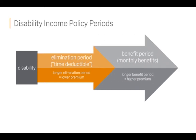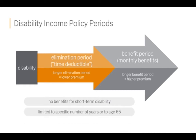The other period is called the benefit period. Once you've gotten through the elimination period and the insurance company starts paying you your benefit, the longer the insurance company has to pay the benefit — maybe two years instead of one year, or six months instead of nine months — the more expensive the premium will be because the insurance company has more out of pocket to pay those claims. Remember, there are no benefits for short-term disability, and these things are limited to a specific number of years, usually not longer than age 65, depending on the type of policy you have.